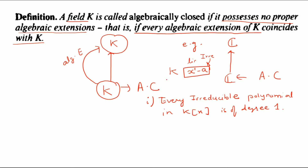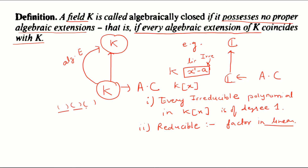If k is an algebraically closed field, then in k[x], the set of all polynomials — every irreducible polynomial will have degree one. Second, every reducible polynomial can be completely factored in the form of linear factors. You can reduce any polynomial down until it becomes irreducible, and those irreducible factors will all be linear. Third, every polynomial will have at least one root present in k.